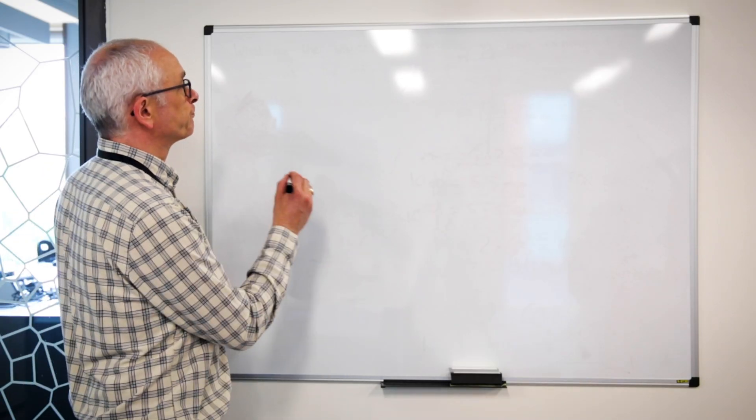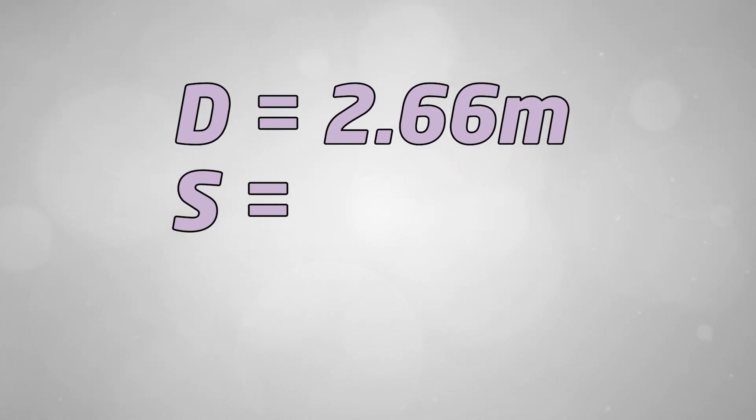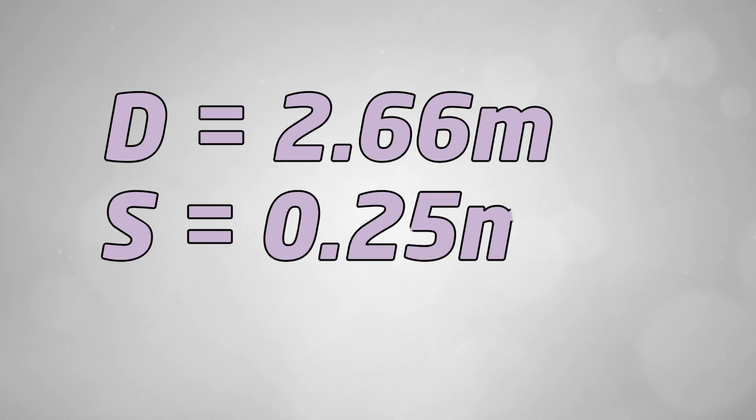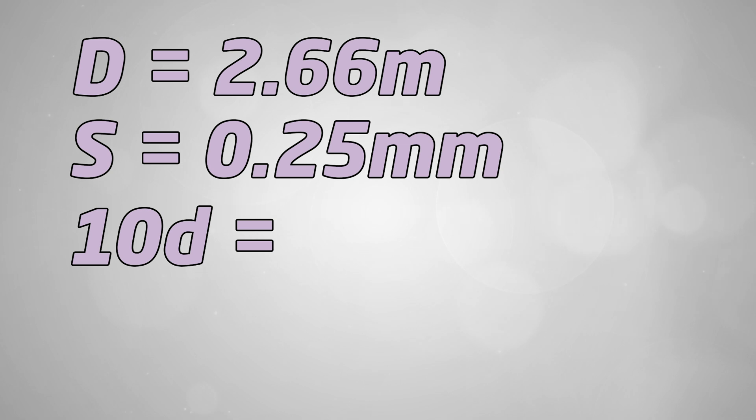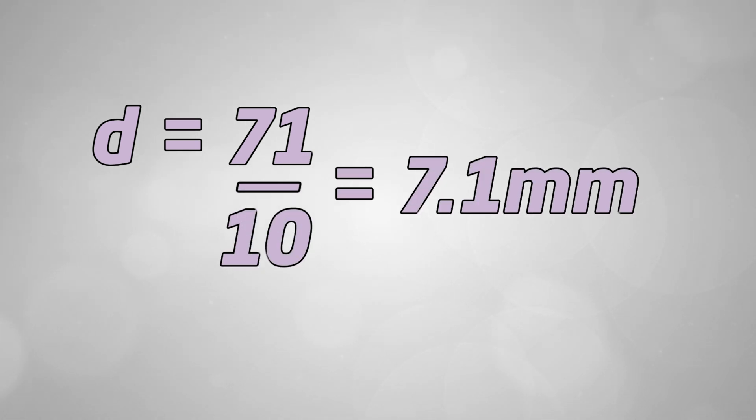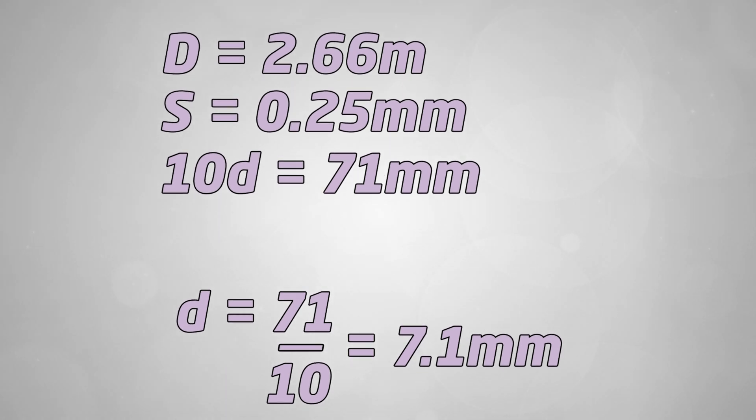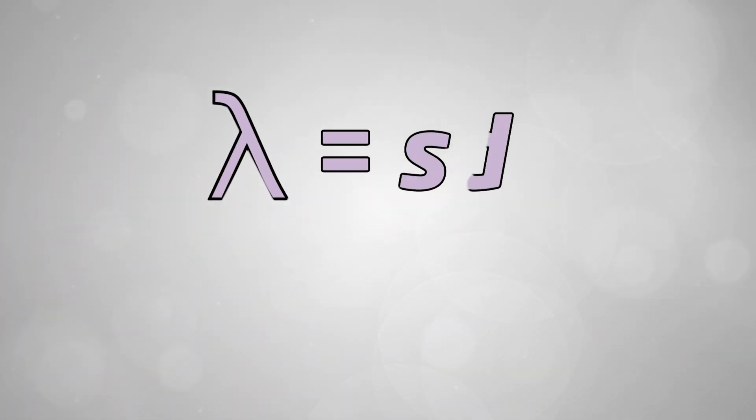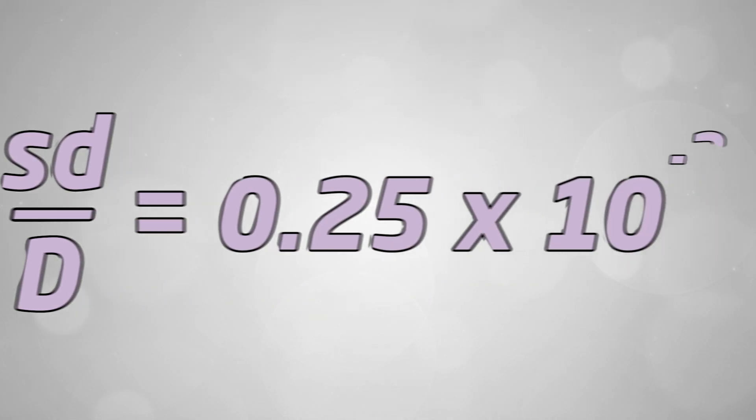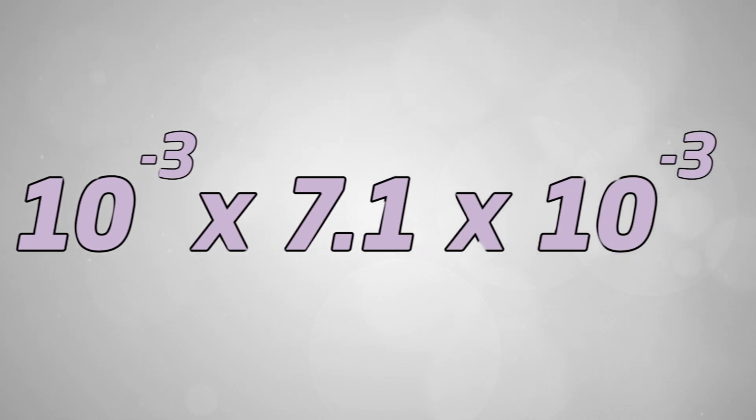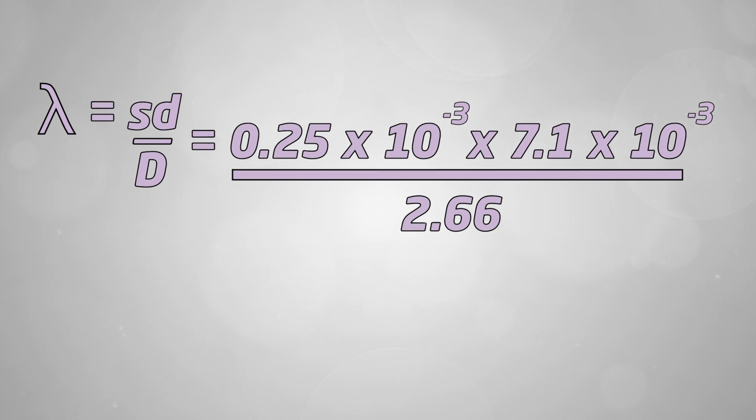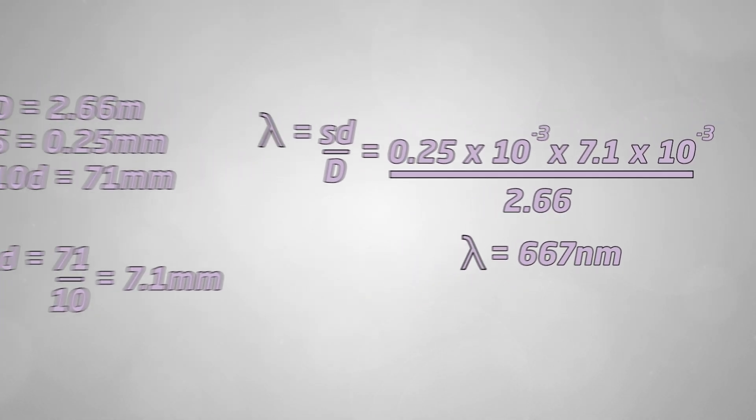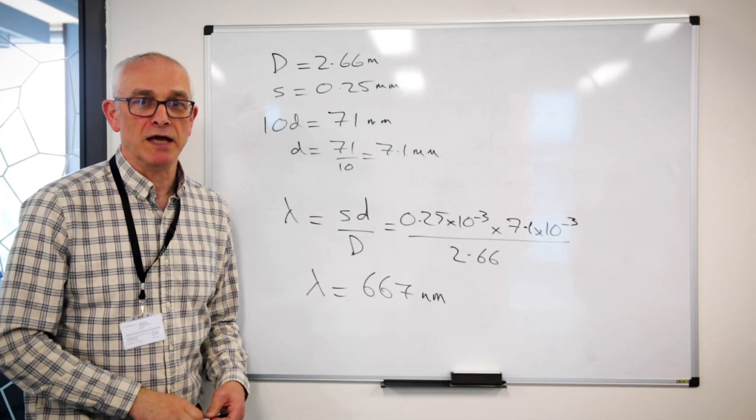Okay, so for the Young's slits, the measurements were: distance from slit to screen 2.66 meters, slit separation 0.25 millimeters. We measured 10 of the fringe widths and that was 71 millimeters, so one fringe width is 71 over 10 which is 7.1 millimeters. We can then put those three measurements into the equation where the wavelength of light is slit separation multiplied by the fringe width divided by slit to screen separation. So that gives us 0.25 milli times by 7.1 milli divided by 2.66 meters, which gives us 667 nanometers, remarkably one nanometer away from the actual wavelength of the laser.